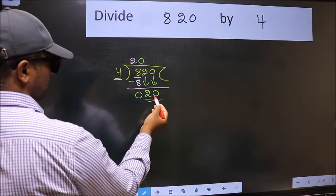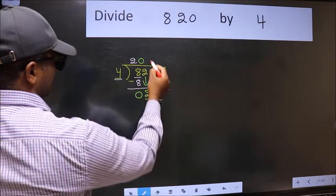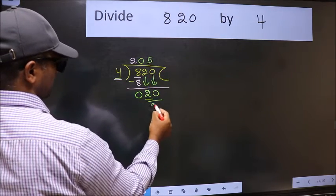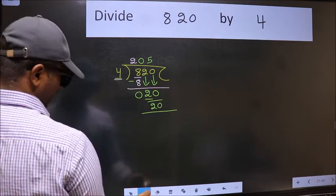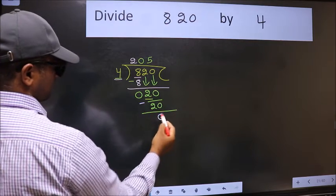Now, 20. When do we get 20 in the 4 table? 4 fives, 20. Now we should subtract. We get 0.